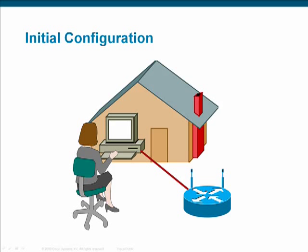The first step in configuring the router is to establish a wired connection between a switch port on the router and your PC's NIC. This wired connection is used to configure the router and can be disconnected after the initial configuration is complete. This connectivity is accomplished through use of a standard Ethernet patch cable.